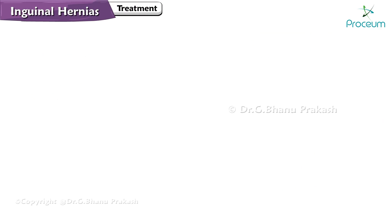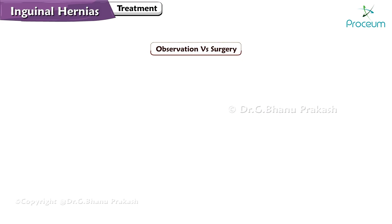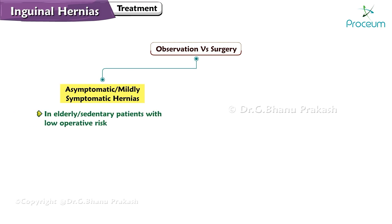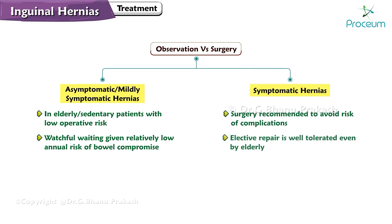Treatment of Inguinal Hernias: Inguinal hernias present a common clinical dilemma with the potential for complications such as incarceration or strangulation. Observation versus surgery: for asymptomatic or mildly symptomatic hernias in elderly or sedentary patients with low operative risk, watchful waiting may be an option given the relatively low annual risk of bowel compromise. Surgery is recommended for all symptomatic hernias to avoid the risk of complications, and elective repair is well-tolerated even by the elderly, particularly when other medical issues are well-managed.